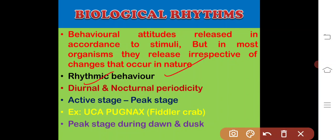It is happening in a rhythmic manner. Those which are active during the day are known as diurnal organisms, and those which are active during nighttime are known as nocturnal organisms. It is repeating daily with a certain periodicity, known as diurnal or nocturnal periodicity.